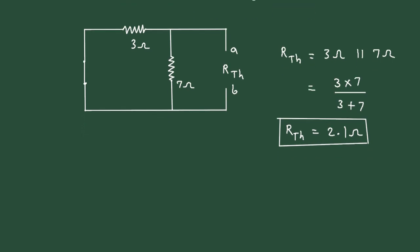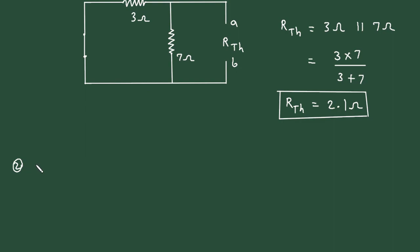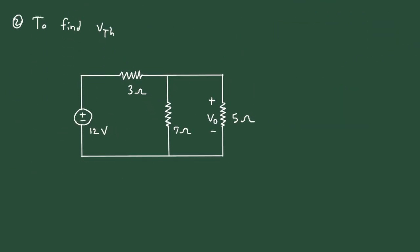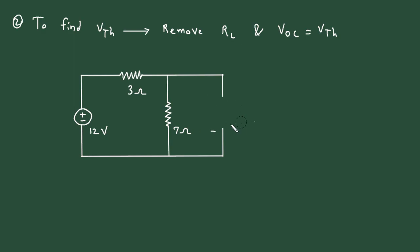Now next, we have to find the value of VTH. To find VTH, again we will remove RL and VOC is equal to VTH. We will remove this RL and let's say this is terminal A and this is terminal B, and this is our open circuit voltage VOC. Now we will find the value of this VOC. Let's say this is current I. The voltage across this 7 Ohm is VOC, so we have to find the voltage across this 7 Ohm — that will be our VOC and our Thevenin's voltage. So first we have to find the value of current I.